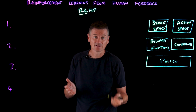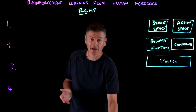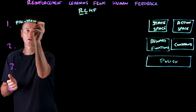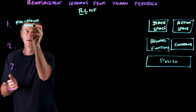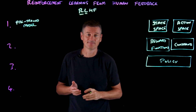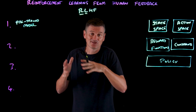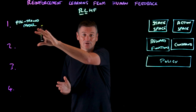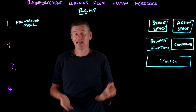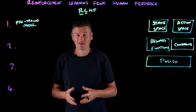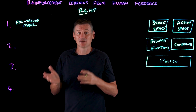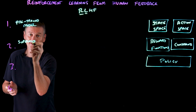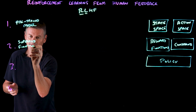Phase one is starting with a pre-trained model. We can't perform this process without it. RLHF is generally employed to fine-tune and optimize existing models, rather than as an end-to-end training method. With a pre-trained model at the ready, we can move on to the next phase: supervised fine-tuning of this model.